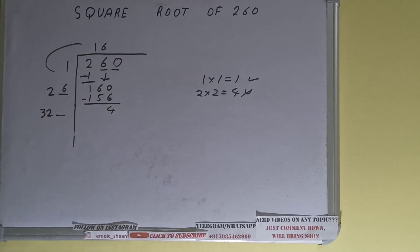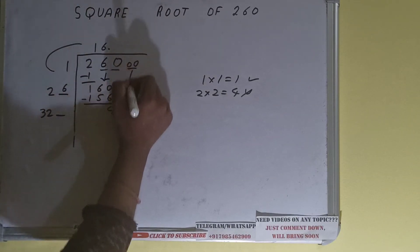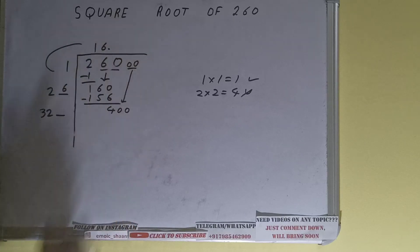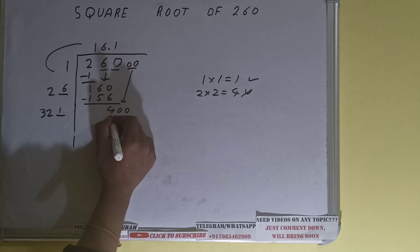But you can see we don't have any more pairs present that can be brought down. So what we'll do is put a decimal. Once you put decimal we can bring down pairs of zeros and the number will become 400. Now one time we can try one here and one here will give 321.